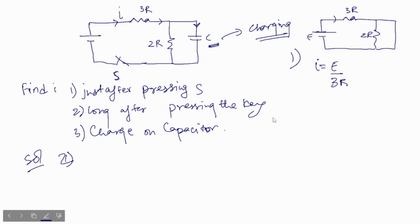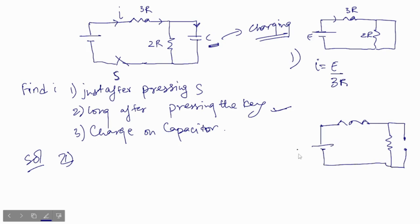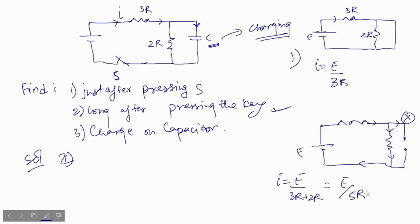In the second case, long after pressing the key, the capacitor is fully charged. When the capacitor gets charged it will not receive any current — it behaves as an open circuit. The current will come and pass through the resistor on that branch, so I will be E / (3R + 2R), that means E / 5R.